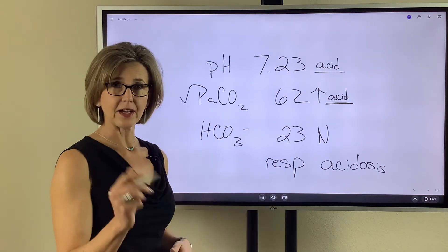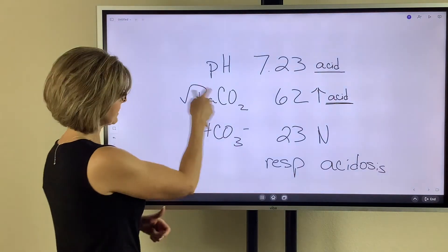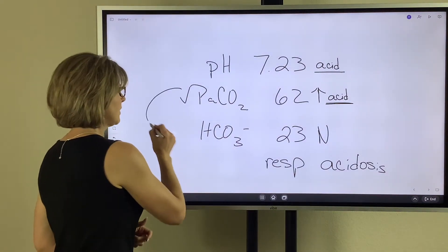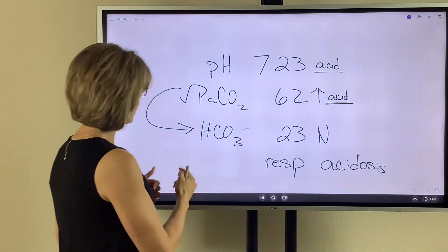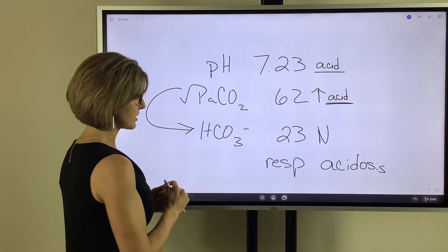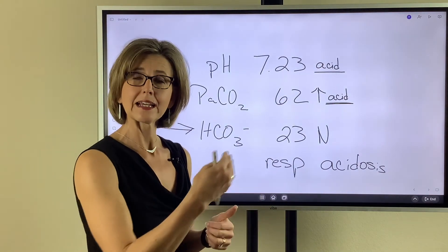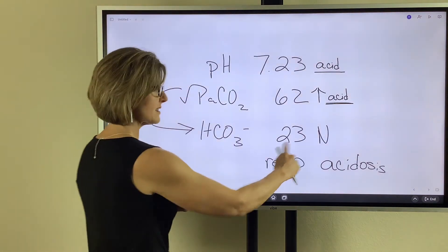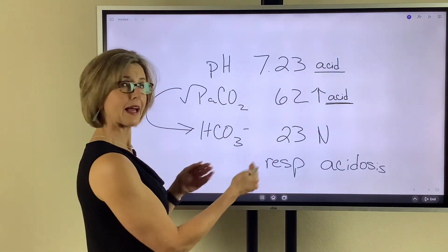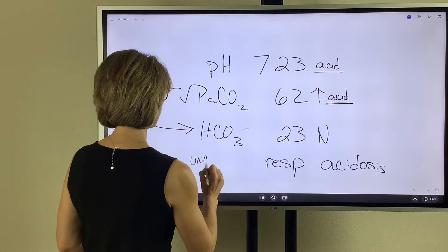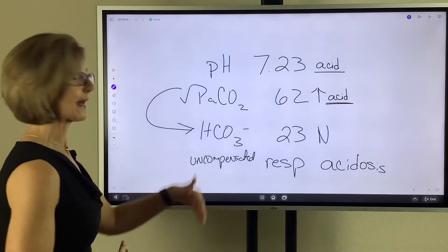The third step is identifying the degree of compensation. Once you determine the system at fault — in this case, the respiratory system — you move to the opposite system, which is the metabolic system, the bicarb. We look at the bicarb and ask: has it moved from its normal range in an attempt to fix the pH? In this case, it's normal — it hasn't moved at all. Therefore, there is no compensation occurring at this time. We call this an uncompensated respiratory acidosis.